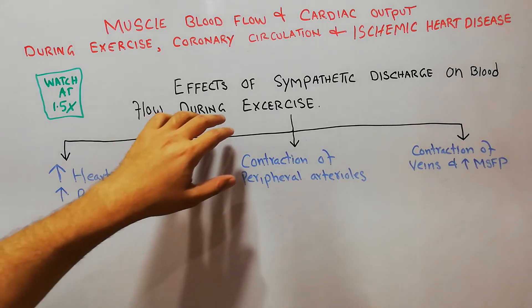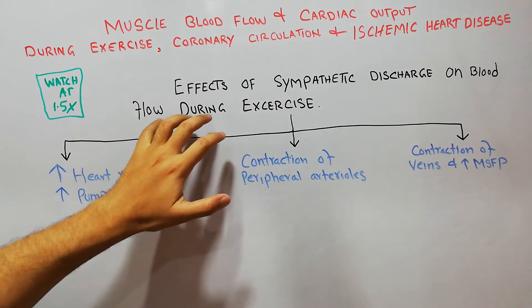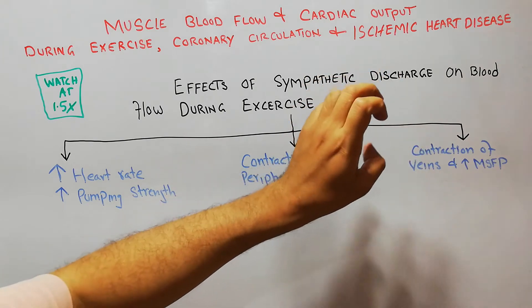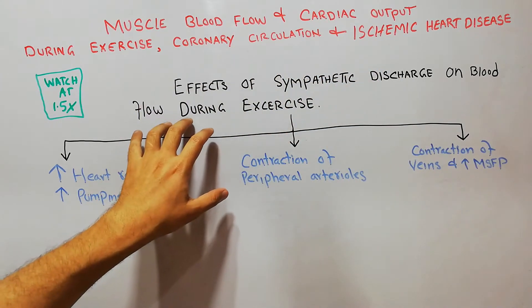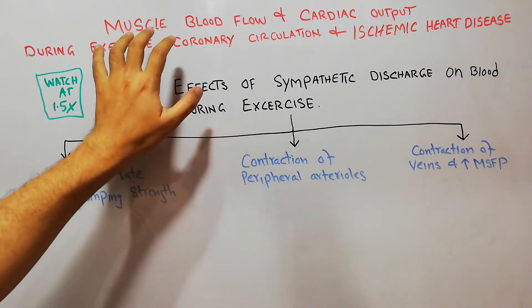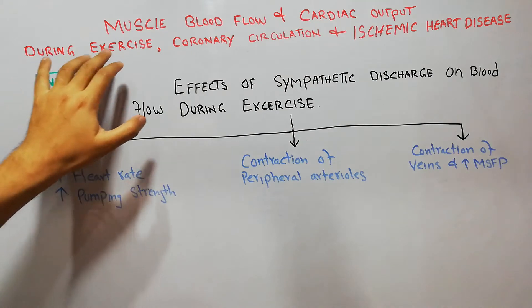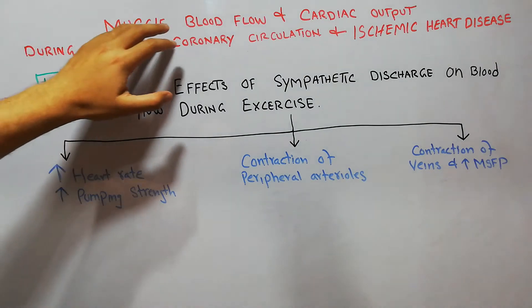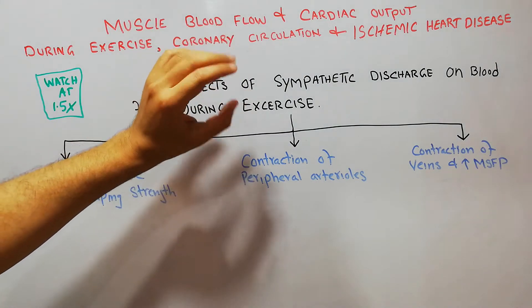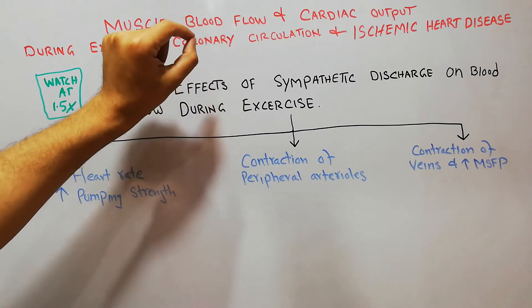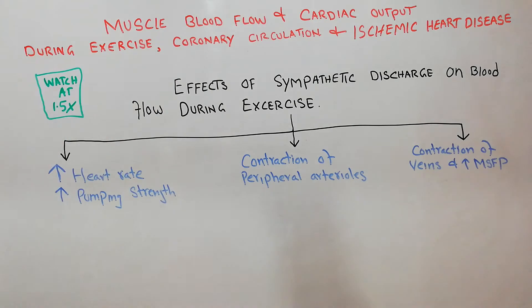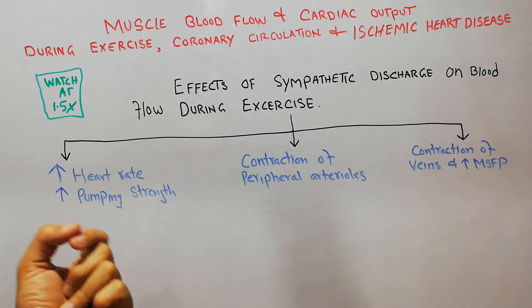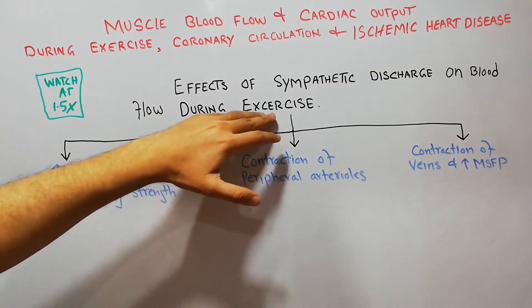Today in this lecture we are going to discuss the effects of sympathetic discharge on blood flow during exercise — specifically, the effects of sympathetic nervous stimulation on blood flow regulation during exercise. We have started a new chapter about muscle blood flow and cardiac output during exercise, coronary circulation, and ischemic heart disease.